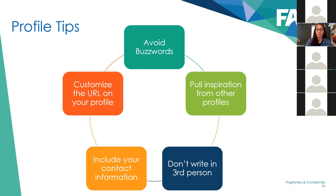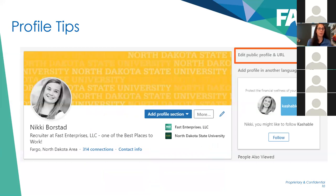Don't write in third person — saying 'Sarah is a hard worker' can come off as pretentious. Include your contact information. It seems obvious but it's not on a lot of profiles. You're doing all this work updating your profile, so make sure recruiters can actually reach you. You can also customize your URL and include that link on your resume. To do that, go into your profile, click 'Edit public profile and URL' in the upper right-hand corner, and change it to whatever you'd like.